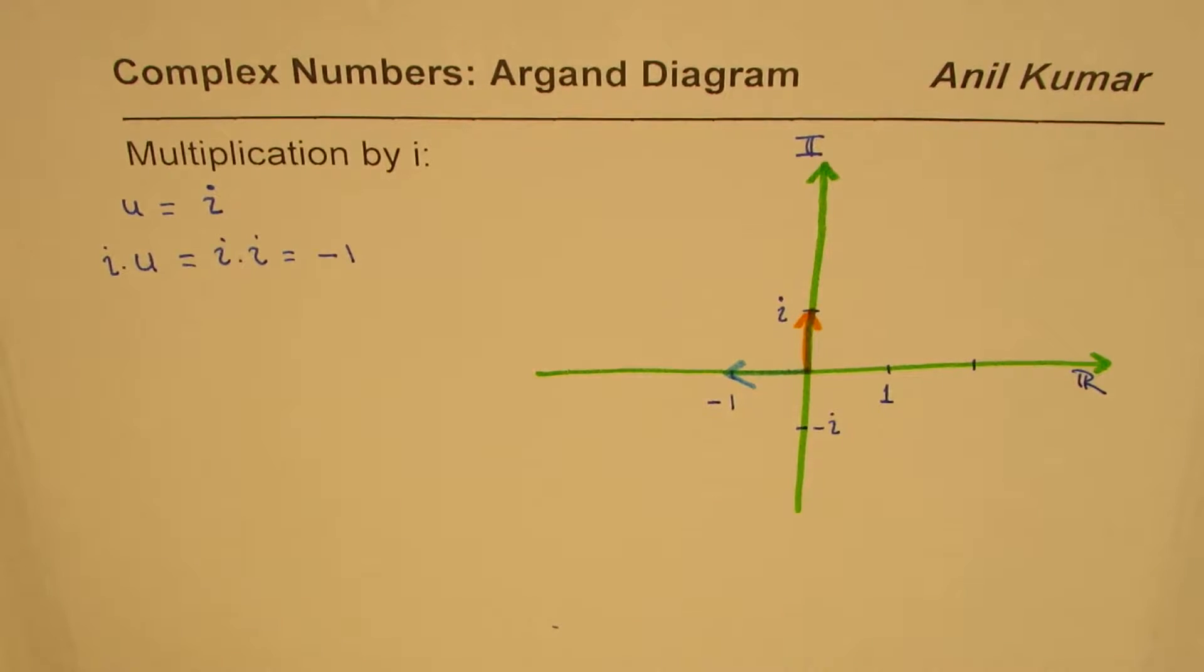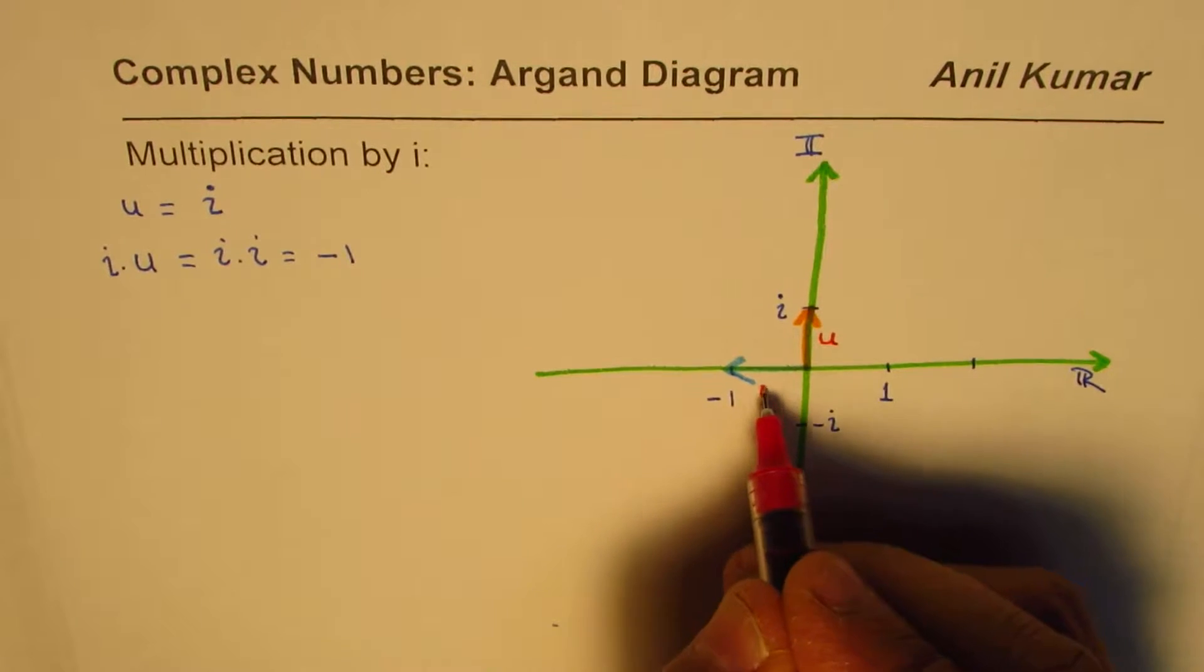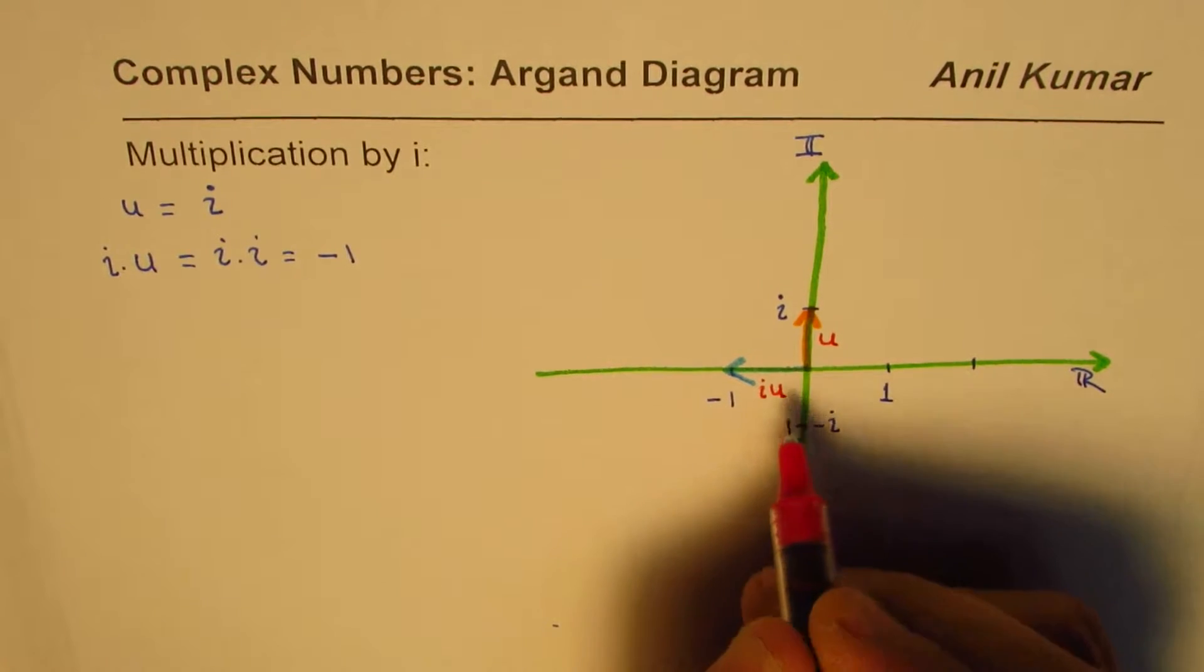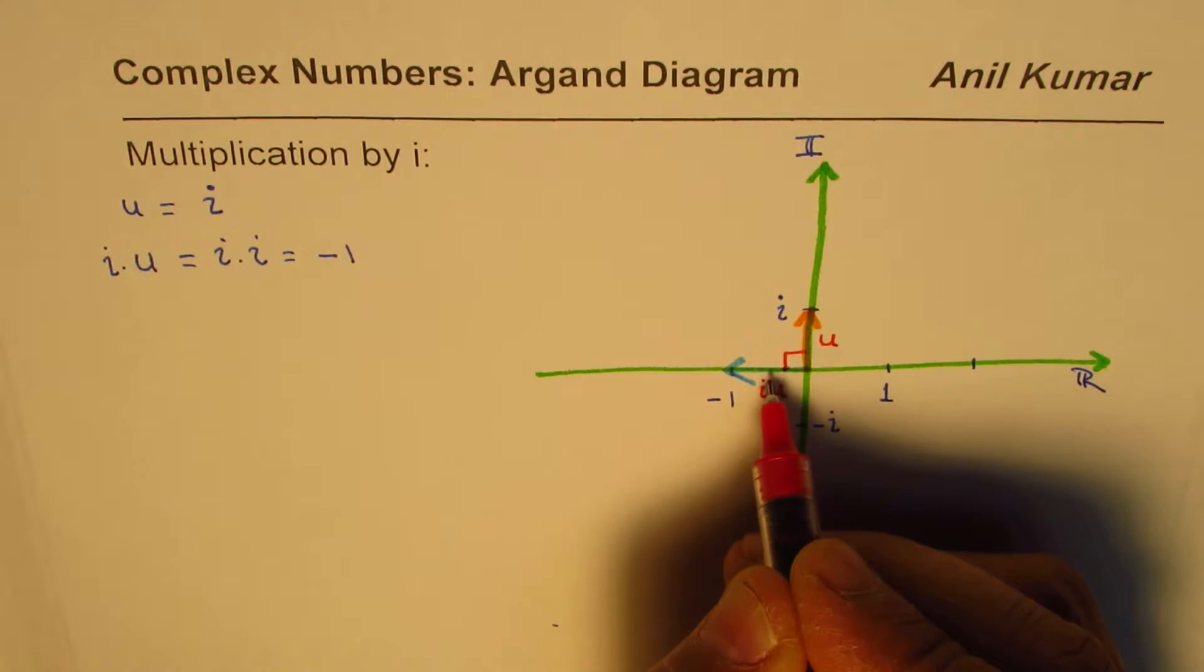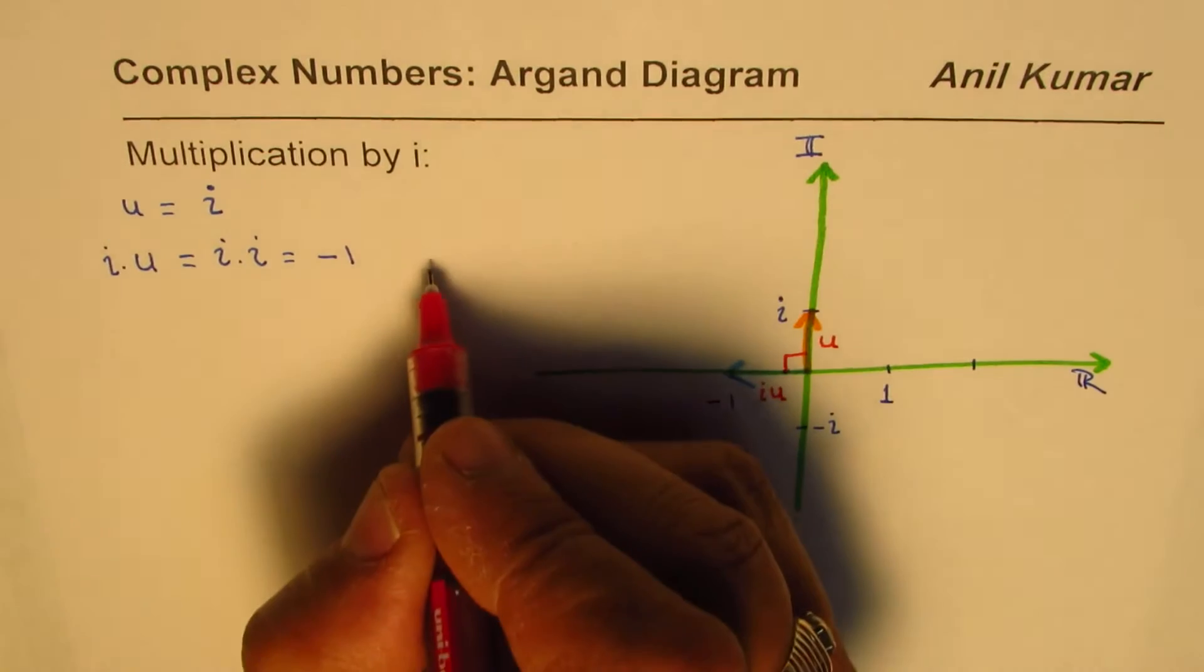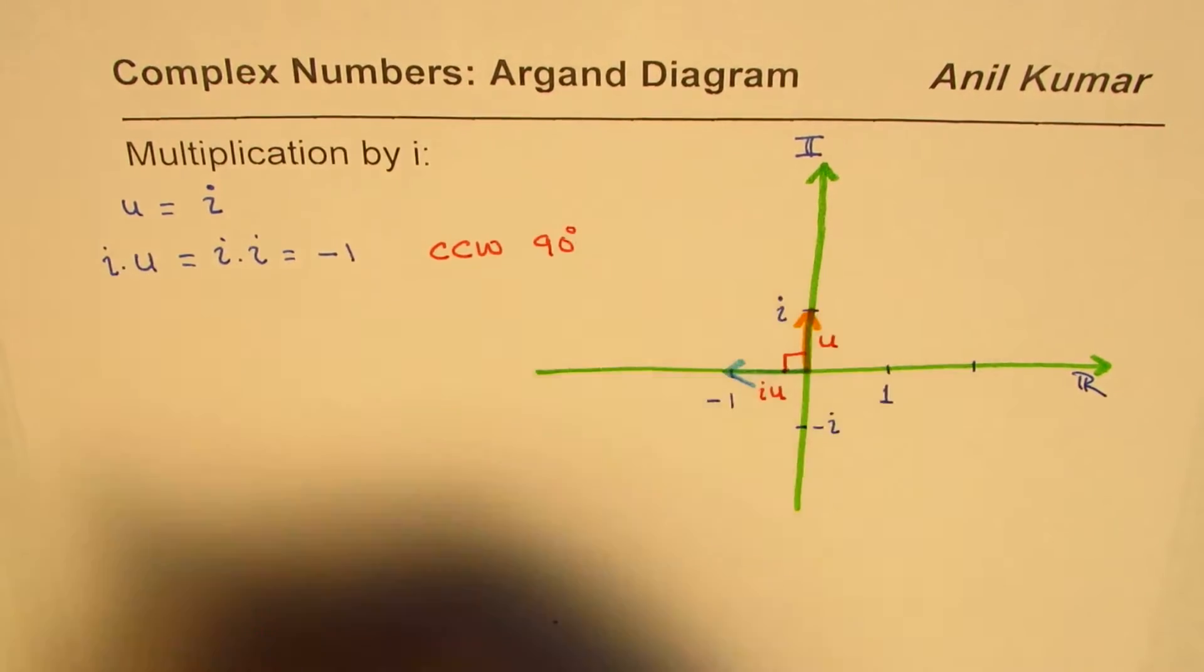So what really happened was that u, when multiplied by i, that means i times u, rotated anticlockwise by 90 degrees. So this is counterclockwise 90 degrees. Do you observe that?